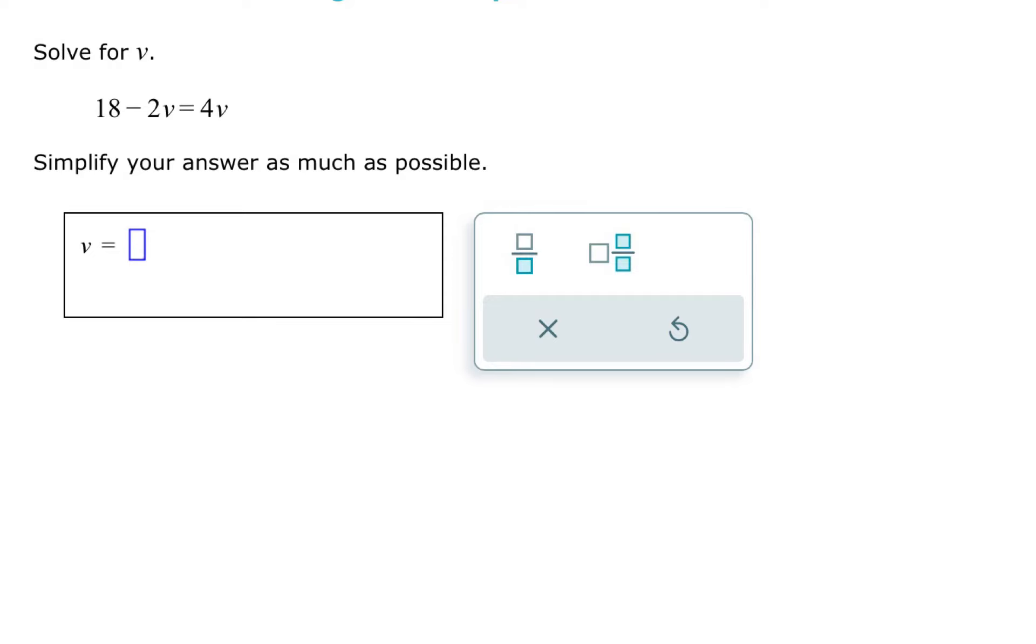This topic is an introduction to solving a linear equation with a variable on each side. So we are going to solve for v here. We have 18 minus 2v equals 4v.